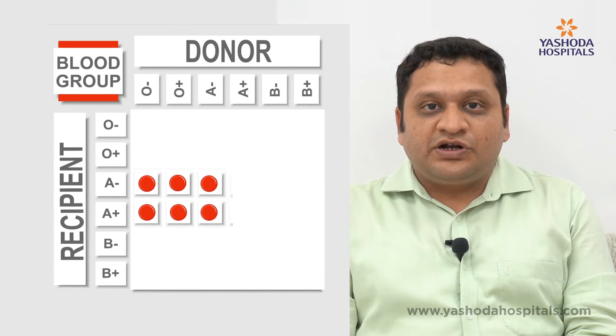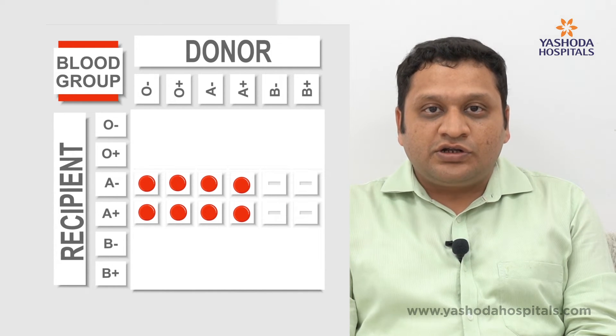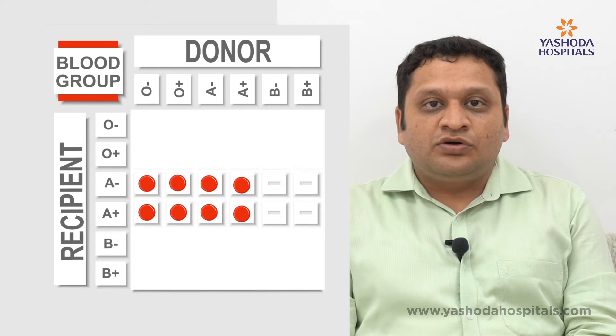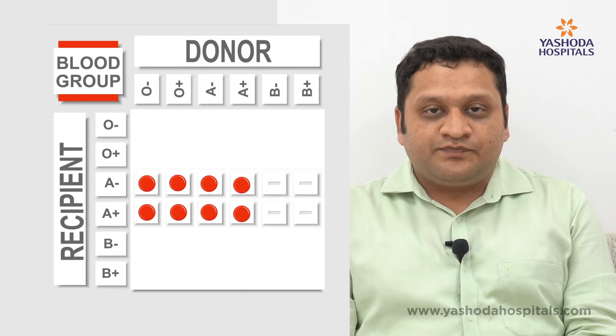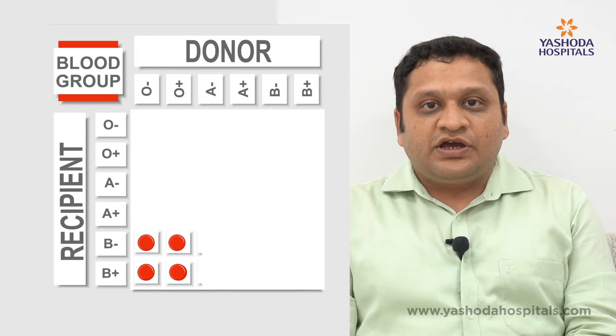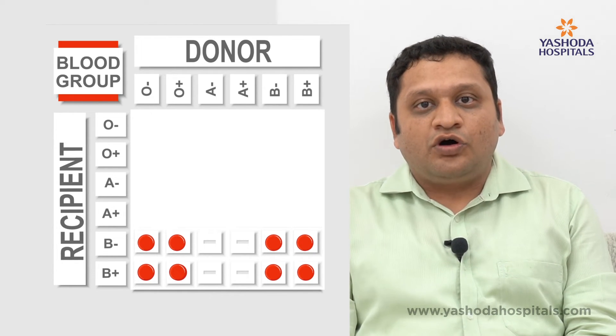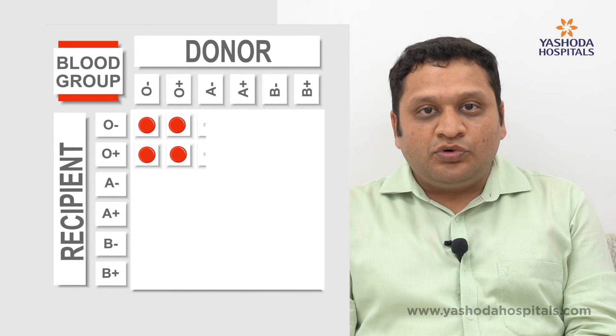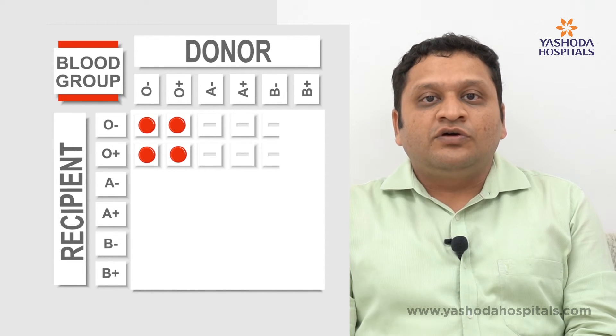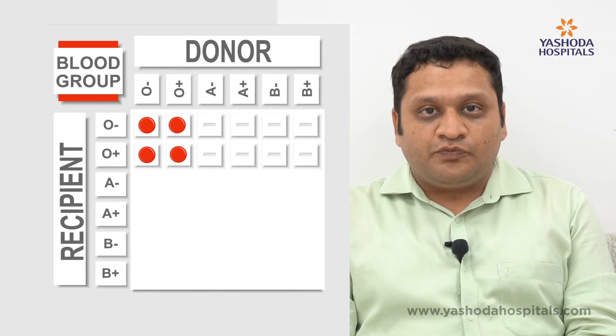A patient with blood group A can receive an organ from a donor who is blood group O or A. A patient with blood group B can receive an organ from a donor who is blood group O or B. A patient with blood group O can only receive an organ from a donor who is also blood group O. In liver transplant, the RH group doesn't matter — whether positive or negative, both can be considered as a donor, provided it matches the compatibility.